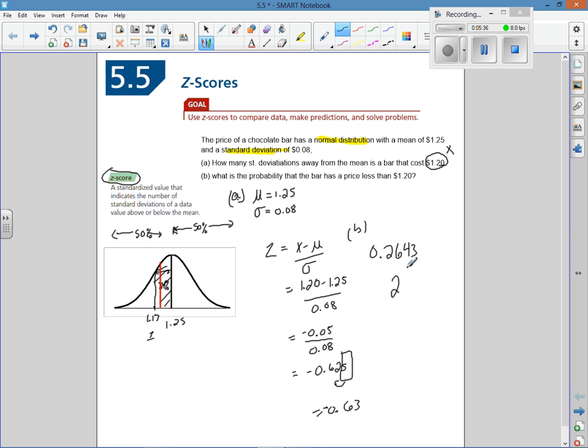Roughly 26%. We would expect that—a full standard deviation away is 34%, so we got less than that. We're in this region right here. The probability is 26% of getting a bar less than that price.